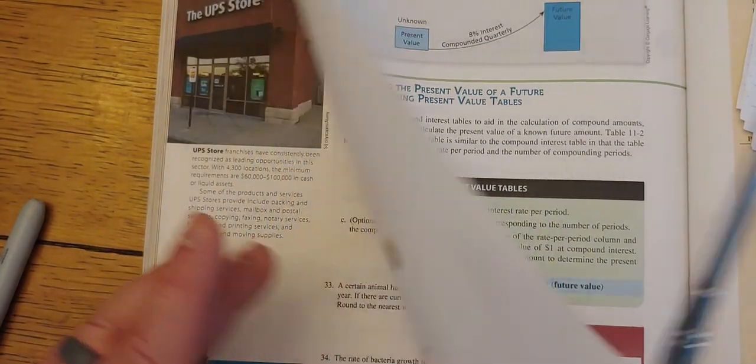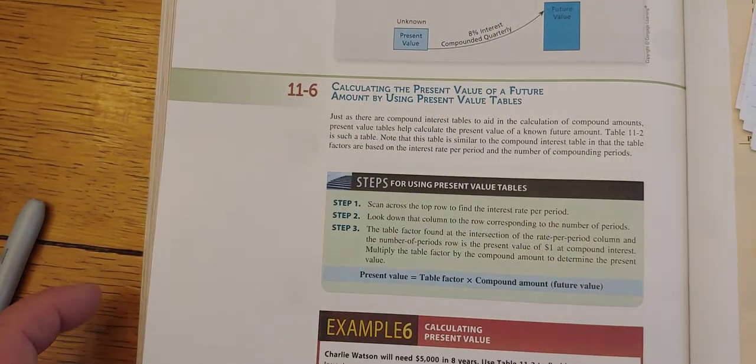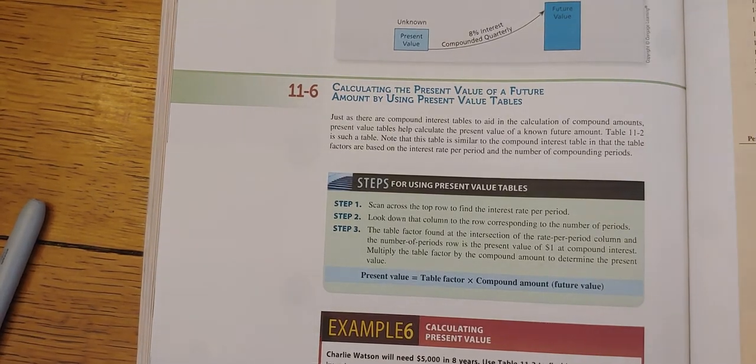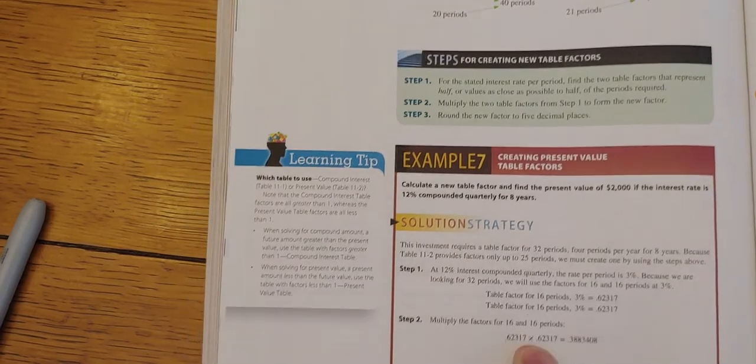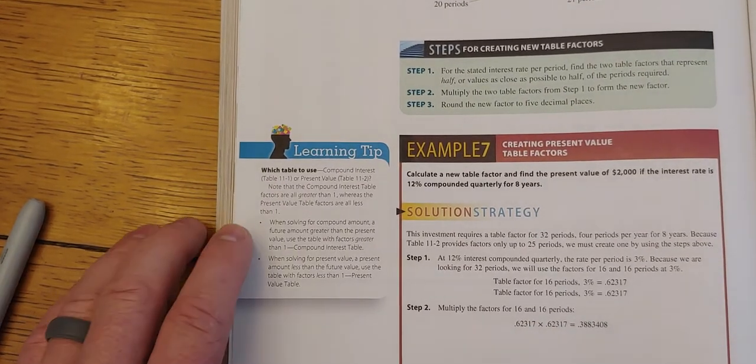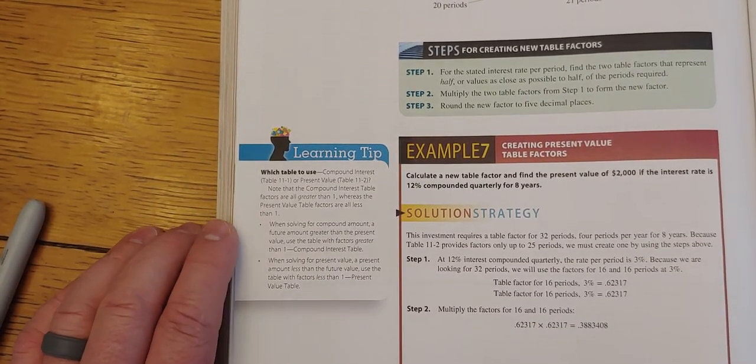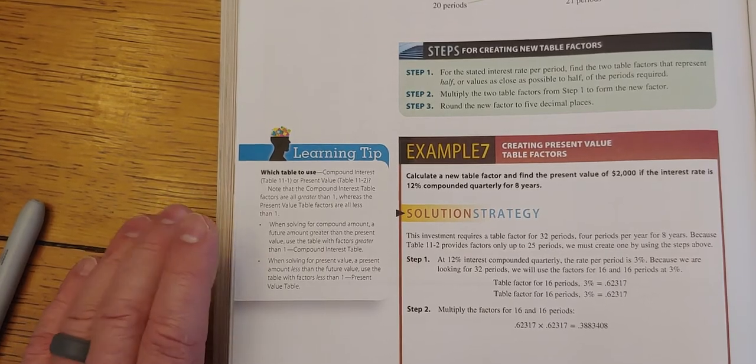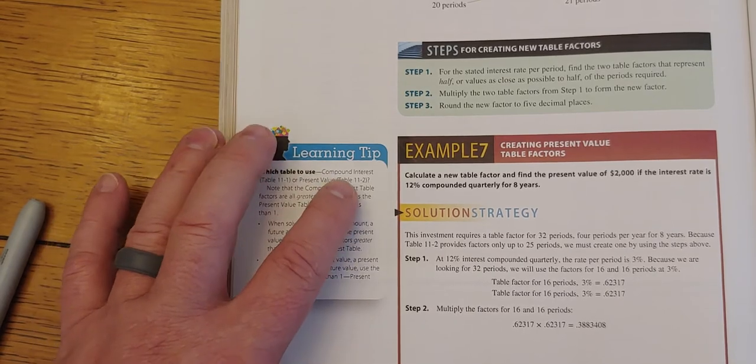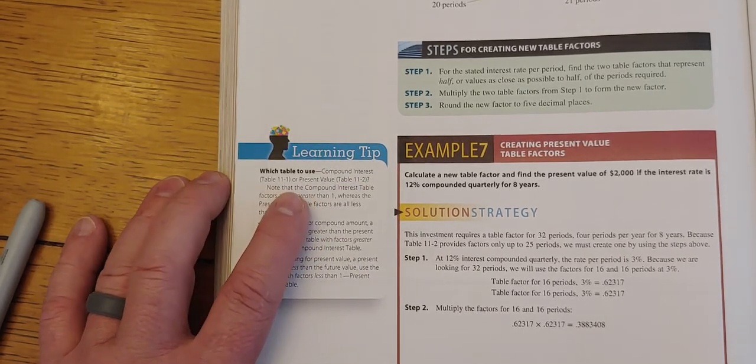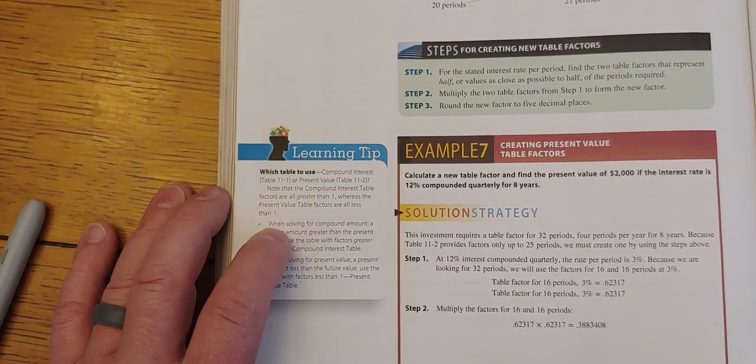Now, I just wanted to point back here on the previous page. The learning tip here. All right. And that's just reiterating what I said earlier. If you're trying to decide which table to use, if you're using tables, which table do I use for the compounding interest or the future value or the present value.